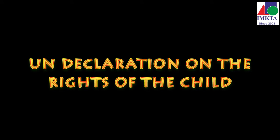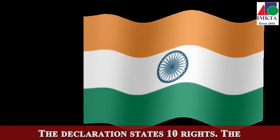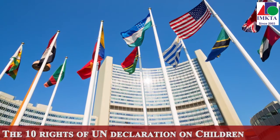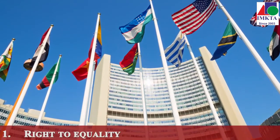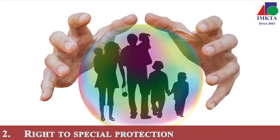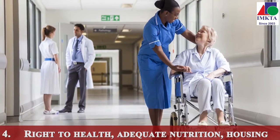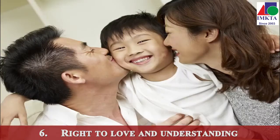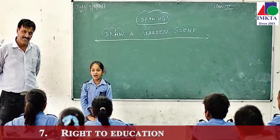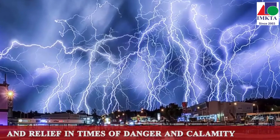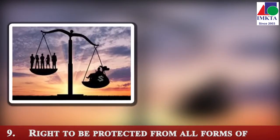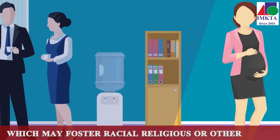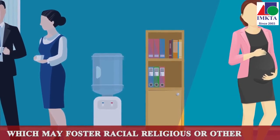UN Declaration of the Rights of the Child. The Declaration states 10 rights, and the Government of India has accepted the Declaration and is a signatory. The 10 rights are: Right to equality; Right to special protection; Right to name and nationality; Right to health, adequate nutrition, housing and medical facilities; Right to special care for children with special needs; Right to love and understanding; Right to education; Right to be the first to receive protection and relief in times of danger and calamity; Right to be protected from all forms of neglect, cruelty and exploitation; and Right to be protected from practices which may foster racial, religious or other forms of discrimination.